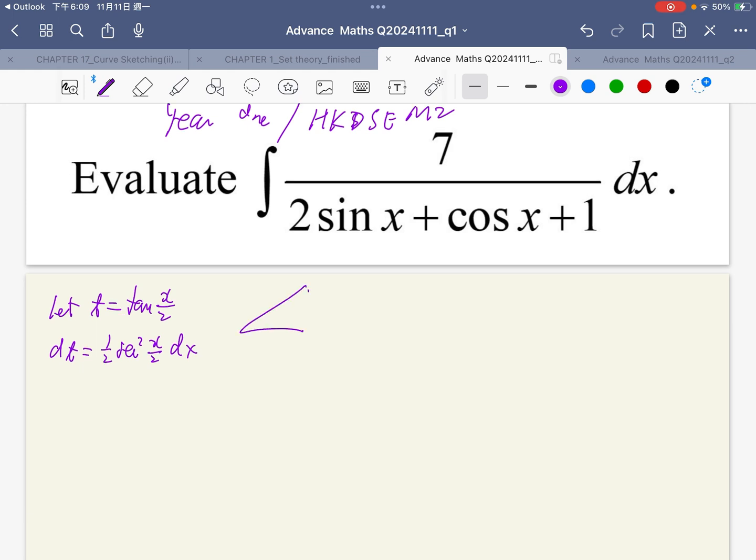Draw a triangle where the angle is x over 2, the opposite side is t, the adjacent side is 1, and the hypotenuse is square root of 1 plus t squared.